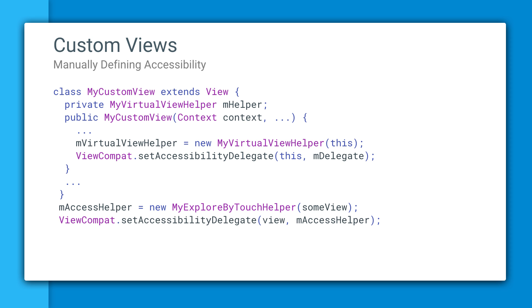If you're using custom views or drawing your app window using OpenGL, you need to manually define accessibility metadata so that accessibility services can interpret your app properly. The easiest way to achieve this goal is to rely on the Explore by Touch helper class. With just a few methods, you can build a hierarchy of virtual views that are accessible to TalkBack.